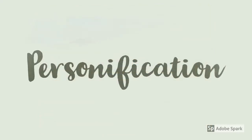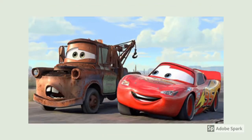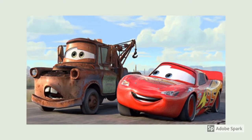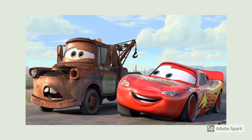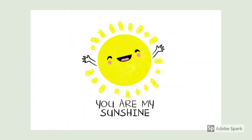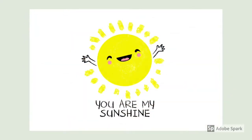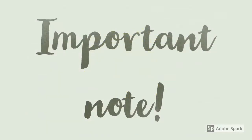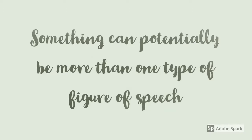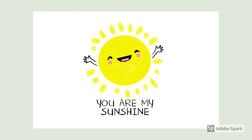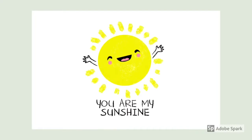Next up, personification. Personification is any inanimate object, like these cars that have human characteristics like eyes or the ability to speak. Back to this image of the Sun — this is also personification because it has human characteristics. It's important to remember that something can potentially be more than one type of figure of speech, and this Sun is just one example. While it is a metaphor, it is also personification.